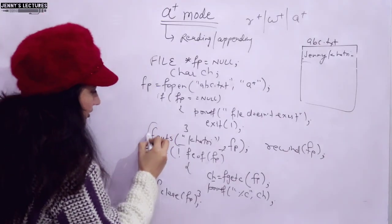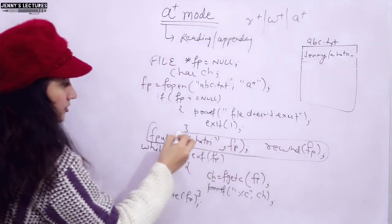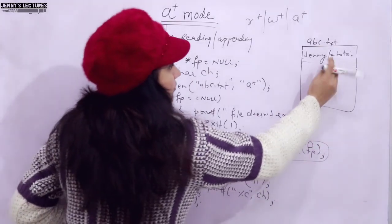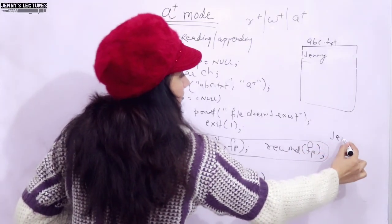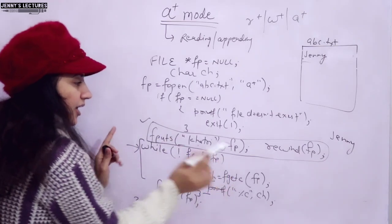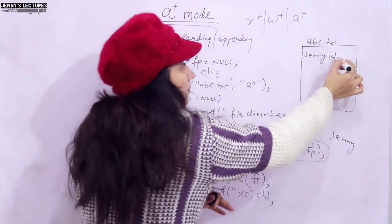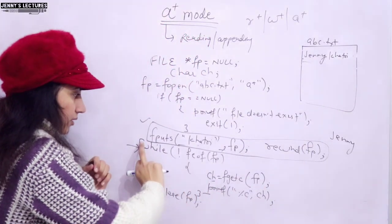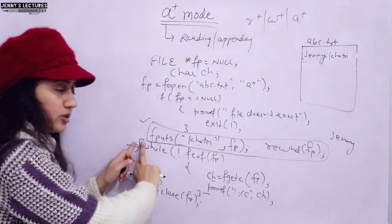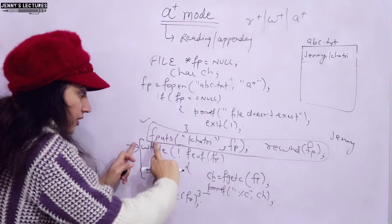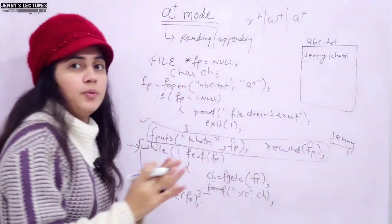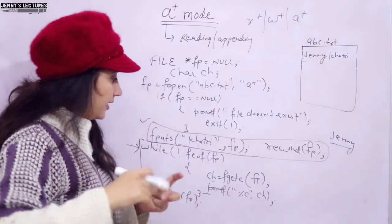Also, if you skip the fputs lines and directly write the reading logic, it will print whatever is currently in the file — for example 'jenny'. If after the reading logic you write fputs 'khatri' to fp, then 'khatri' would be appended at the end of the file. But 'khatri' would not be printed on screen, because the reading logic ran before it was appended. So only 'jenny' would appear on the screen. Let me now show you practically.